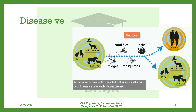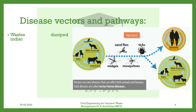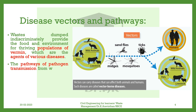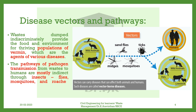Disease vectors and pathways. Wastes dumped indiscriminately provide the food and environment for thriving populations of vermin, which are the agents of various diseases. The pathways of pathogen transmission from wastes to humans are mostly indirect through insects — flies, mosquitoes, and roaches — and animals such as rodents and pigs.